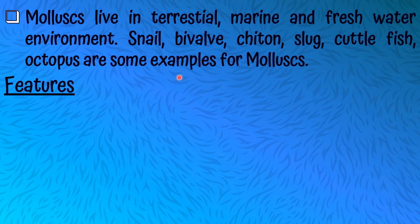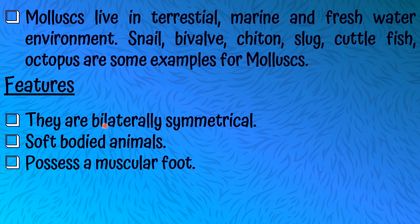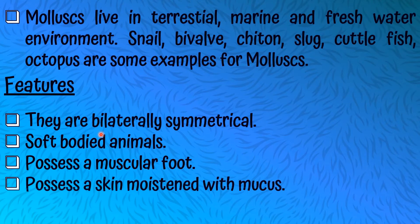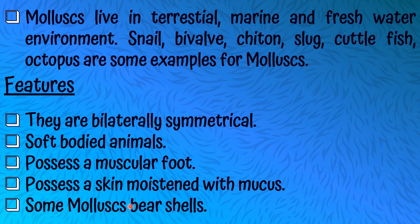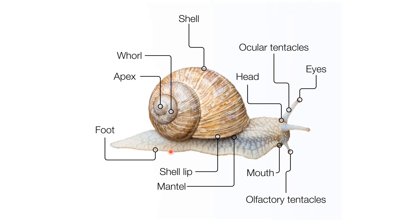Let's talk about the features of molluscs. They are bilaterally symmetrical, soft-bodied animals. They possess a muscular foot. They possess skin moistened with mucus. Some molluscs bear shells, like snails. They are very slippery because of the skin moistened with mucus.